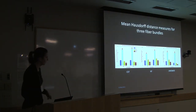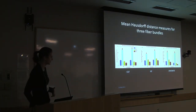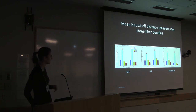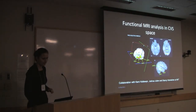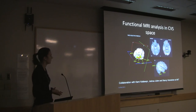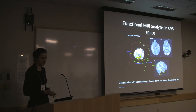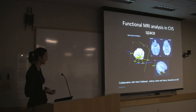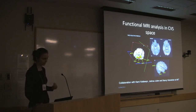We also have quantitative results describing our performance. Here I'm showing three different tracts we evaluated: the CST, the ILF, and another tract. Yet another domain where CVS was recently successful is mapping functional MRI results into a common space for comparing different populations, in a framework of collaboration with the MIT lab.